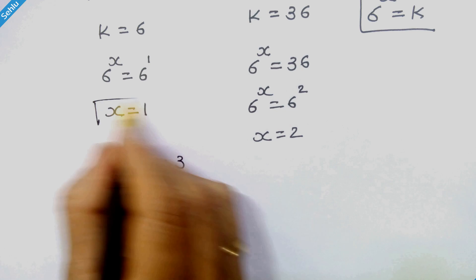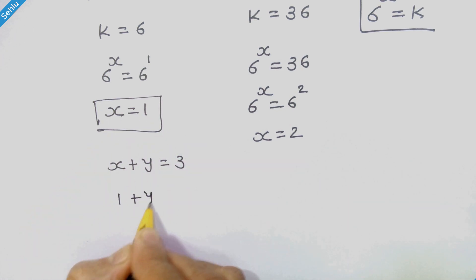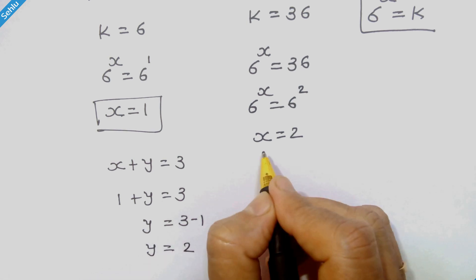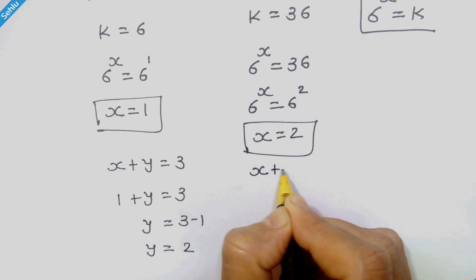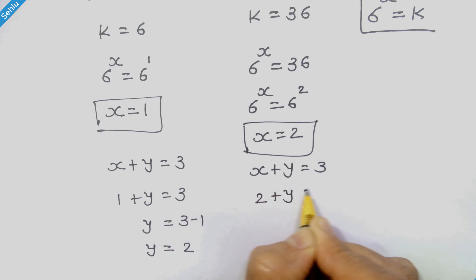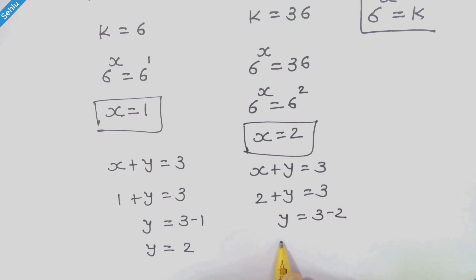Now we use equation 2, x plus y is equal to 3, to find the corresponding values of y. Putting x equal to 1: 1 plus y equals 3, so y equals 3 minus 1, giving y is equal to 2. Now putting x equal to 2: 2 plus y equals 3, so y equals 3 minus 2, giving y is equal to 1.